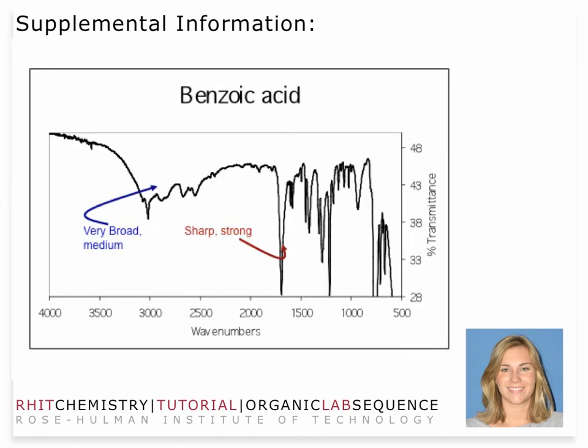Here's another example — this is benzoic acid. You'll notice a broader peak that looks like it's split into a bunch of smaller peaks, but in fact that's one larger peak with other signatures overlaying on it. There's a sharp, strong singlet right around 1700 wave numbers — that's another carbonyl. We call that a carbonyl stretch because it's the result of a stretching motion.